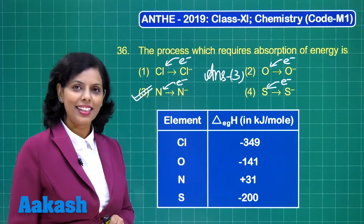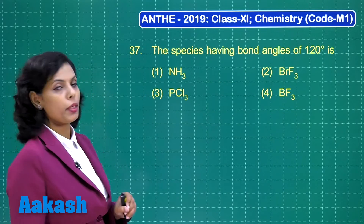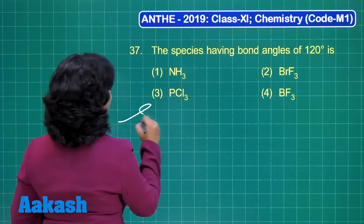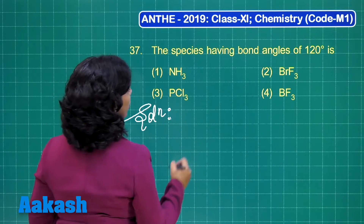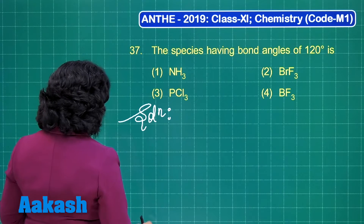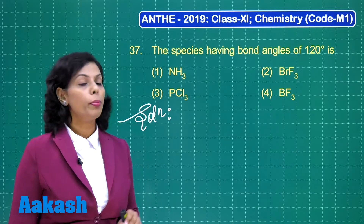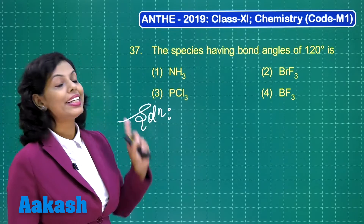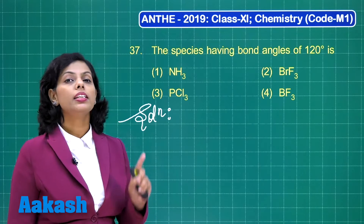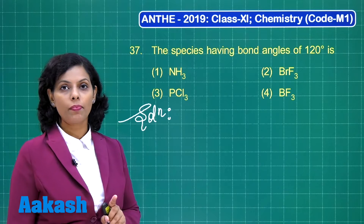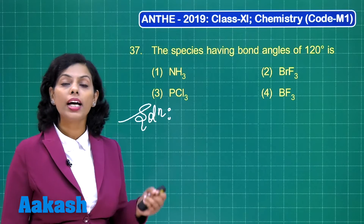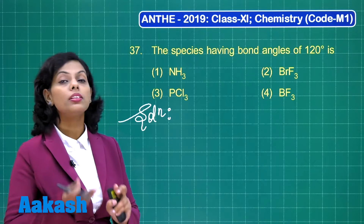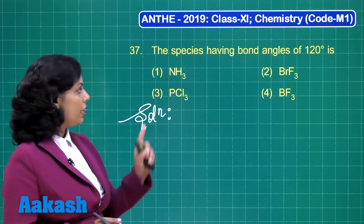Question number 37: identify the species having bond angles of 120 degrees. For a 120° bond angle, the hybridization must be sp2 and there should be no lone pair on the central atom, since lone pairs cause distortion. Ammonia (NH3) has tetrahedral geometry with a lone pair on nitrogen, so its bond angle is distorted and not 120°.